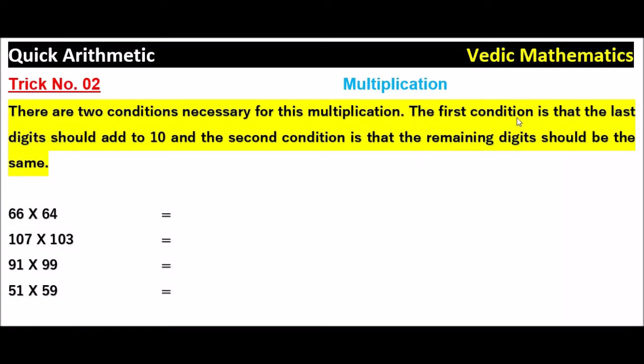The first condition is that the last digit should add to 10. For example, 66 into 64, the last two digits, unit digits, 6 plus 4, it is 10. In case of 107 into 103, the last two digits, unit digits, 7 plus 3, 10. The first condition is that the last digits should add to 10.